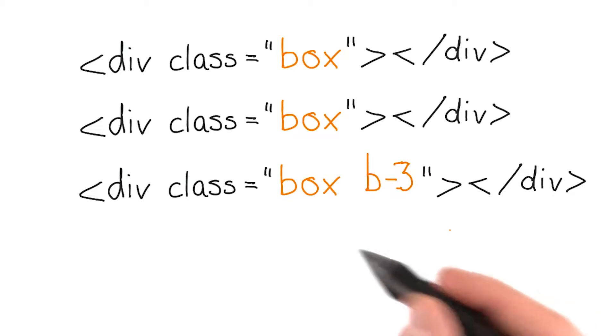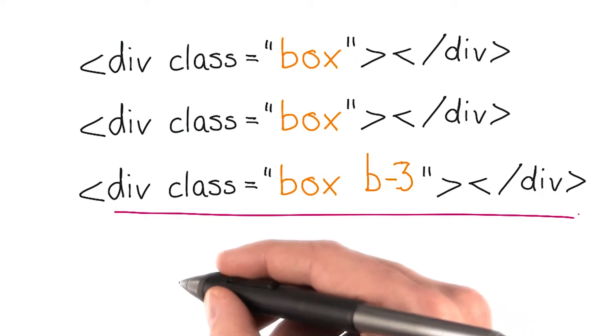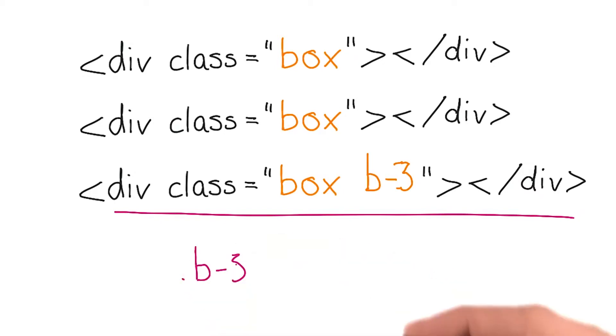It's possible to select this div either with its class like this, or with a more complex selector like this. It's complex because in order to know if the style applies, it has to figure out if this is the third child. Whereas with this, it can simply use the class name.